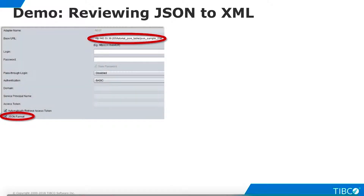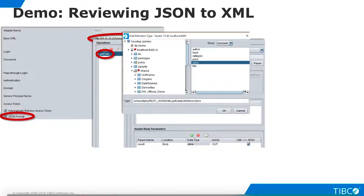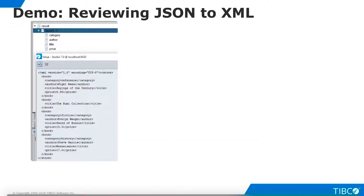The public URL shown here contains a very simple RESTful web service that returns a result in JSON format. We specify the URL and select JSON format. We define a get data operation and use design by example to identify the data elements. We select the top level element store and use it as the data type for an output parameter named result. We execute the get data operation and our result is automatically rendered as XML. We can then flatten this XML with the TDV transformation editor and join it with other data.